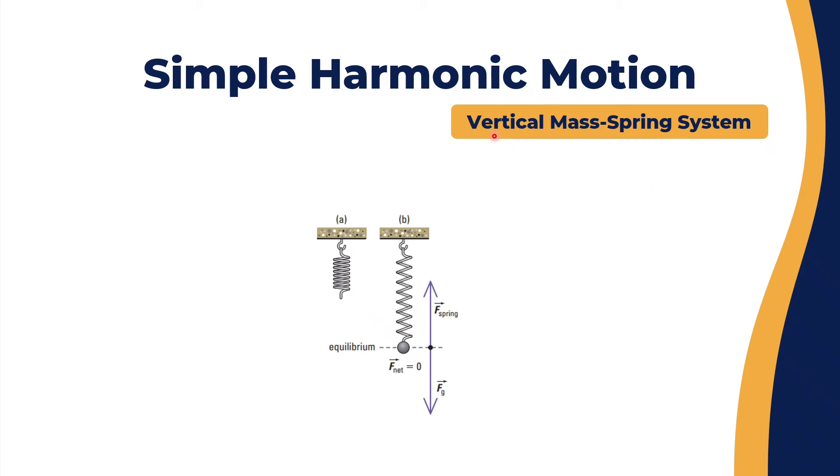Now let's take simple harmonic motion for a vertical mass-spring system. Same concept: you have a spring in equilibrium, you put a ball on it, now you have a new equilibrium. The force of the spring is pulling upwards, the force of gravity is pushing downwards.